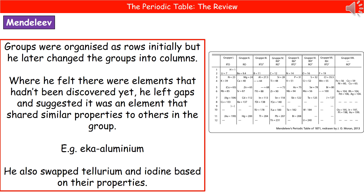One of those predicted elements was what he called eka-aluminium. Another thing he also did was swap around tellurium and iodine. That was based on the properties that they had — he thought that they actually fitted better with other groups. So he swapped them on his version of the Periodic Table.